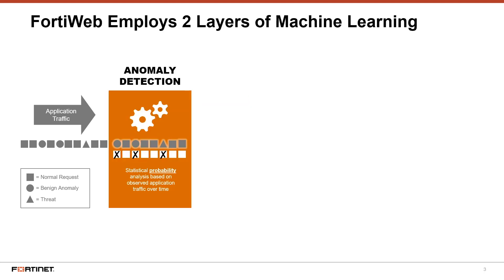FortiWeb's machine learning is a completely different approach to threat detection that uses statistical probability instead of exacting matches to observed activities. Traffic requests that stray from expected behaviors are flagged by the first machine learning engine as anomalies, and normal traffic is allowed to proceed.